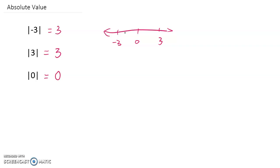So you can probably tell an absolute value can never be negative. The smallest possible absolute value is 0.